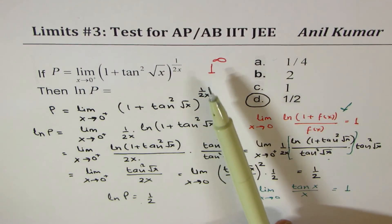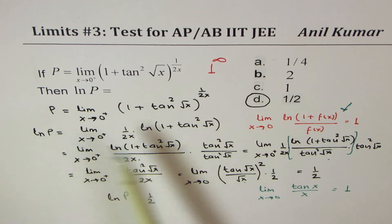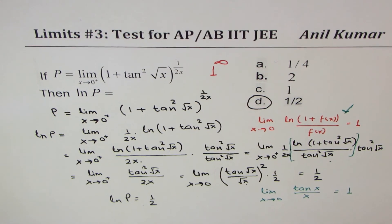So whenever you have 1 to the power of infinity, take natural log on both sides, and then it is easier to solve such questions. I hope that helps. Feel free to write your suggestions and comments. Share my videos, and if you like, that'd be great. Thank you, and all the best.